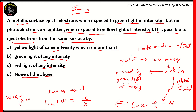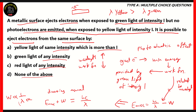So when wavelength increases, the work function decreases. For a light source higher up in the wavelength spectrum, you need to provide more intensity in order to achieve the work function. In the color spectrum, the wavelength of yellow is more than the wavelength of green. So we need to provide more intensity of yellow light in order to achieve the same work function. Therefore, the correct option is option A: yellow light of the same intensity, which is more than I.